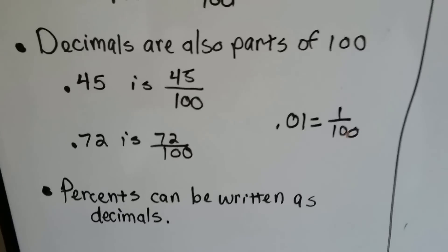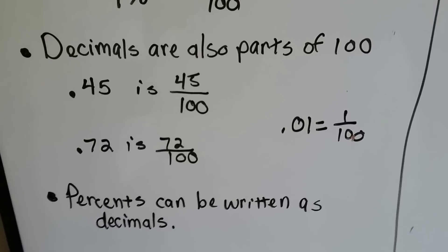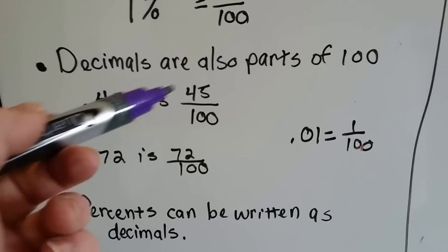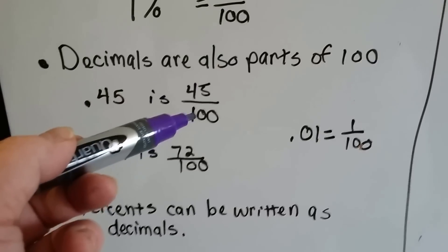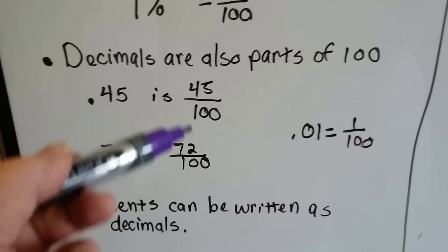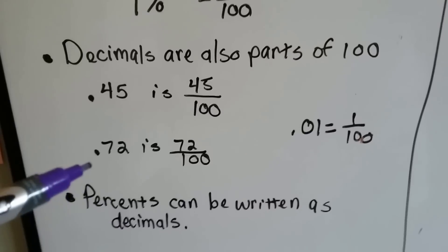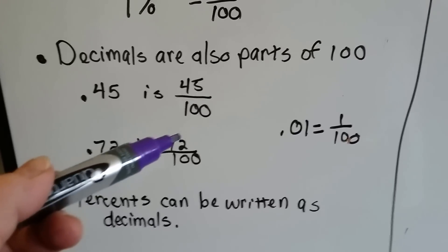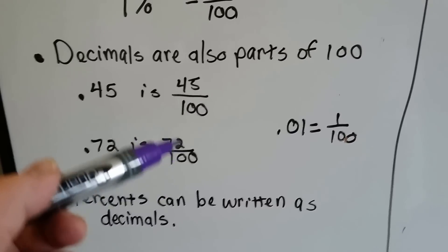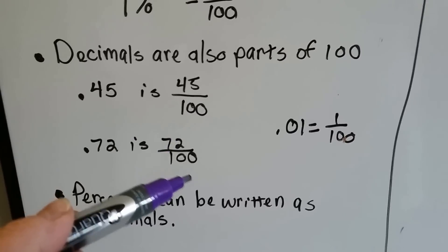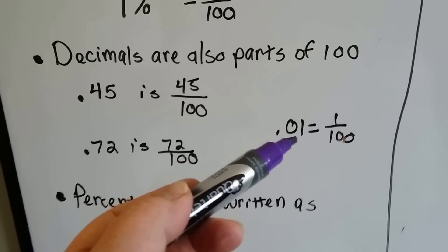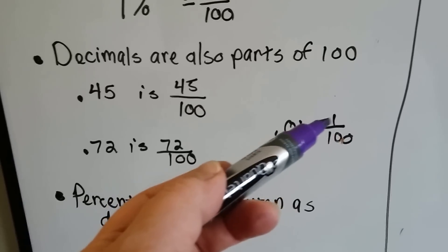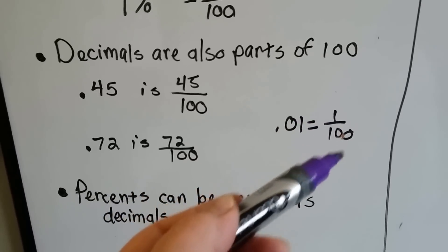Decimals are also parts of 100. Point four-five is forty-five hundredths — forty-five over 100 as a fraction. Point seven-two is seventy-two hundredths, which is seventy-two over 100 as a fraction. Point zero-one is one hundredth, which means one over one hundred as a fraction.